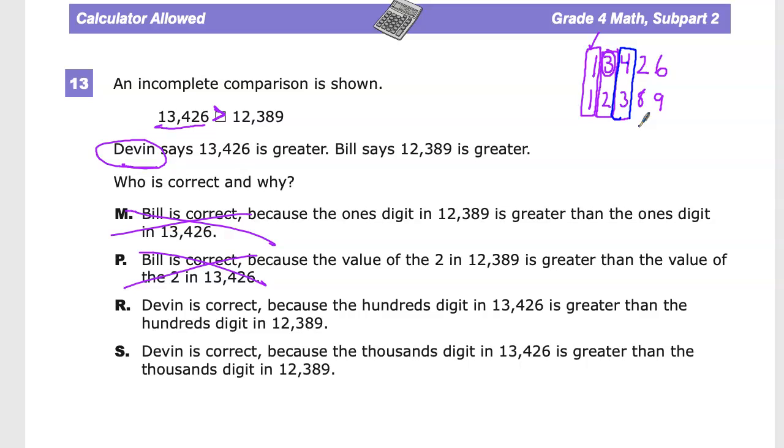But that is not why 13,429 or 26 is greater than 12,389. If this three was a one, then this number would be bigger. The thing that actually matters is the larger of the place values. This is the point that makes a difference. So R is not correct.